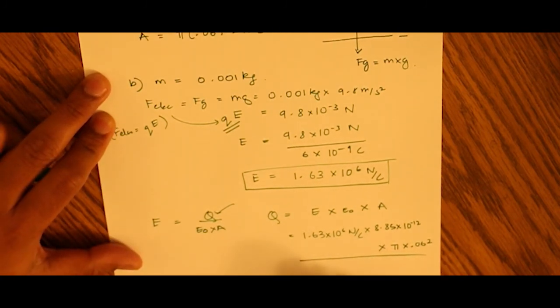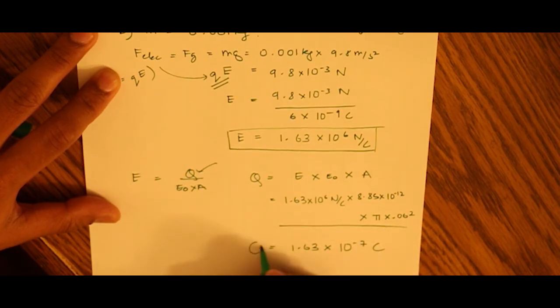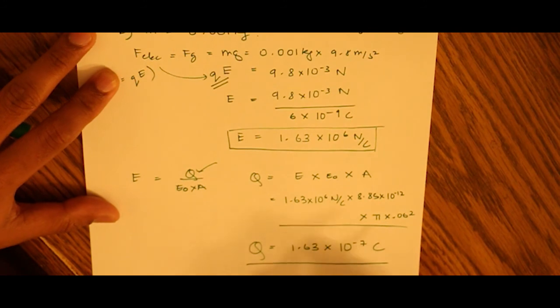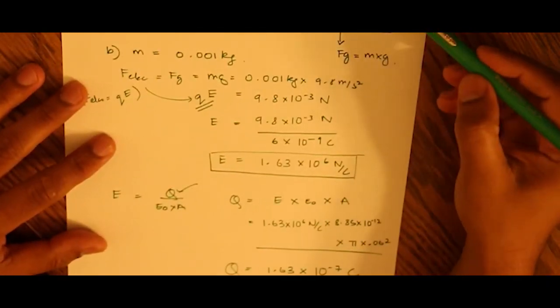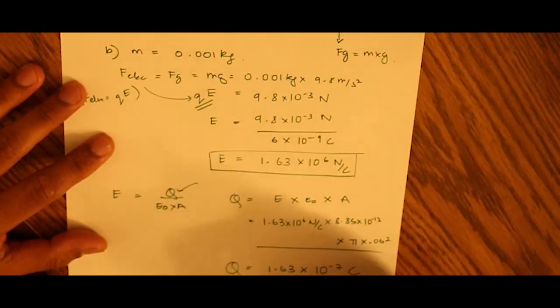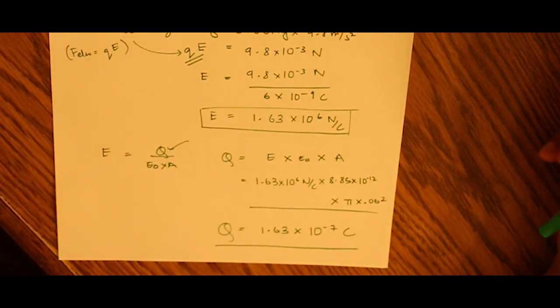And we end up with a value of 1.63 times 10 to the negative 7 coulombs, and that's the charge on the positive plate of the electrode. And the charge on the negative plate would have a negative value here.